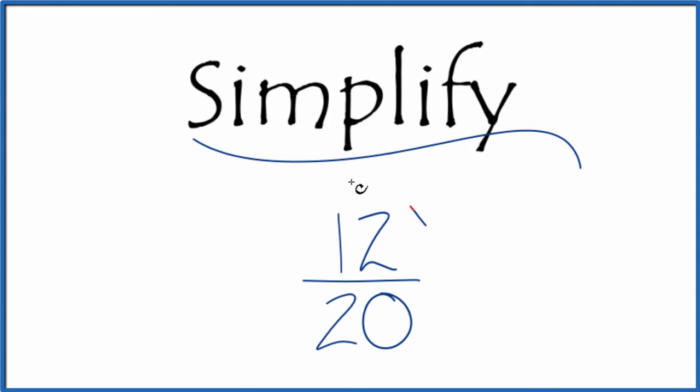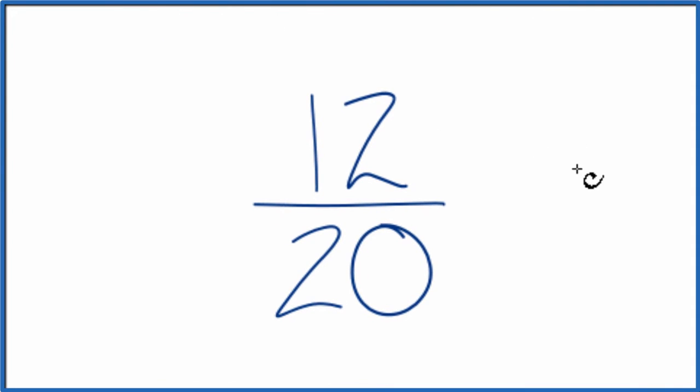Let's simplify the fraction 12 over 20. What we're trying to do is find another fraction that's equal to 12 over 20. It has the same value, it's just that we've reduced it to lowest terms or simplest form.